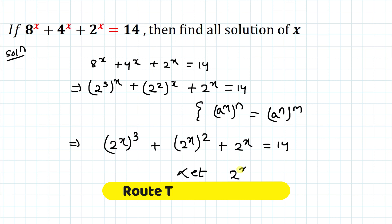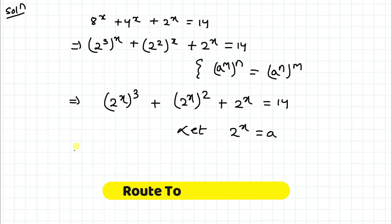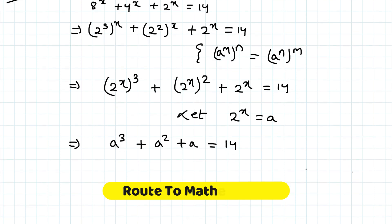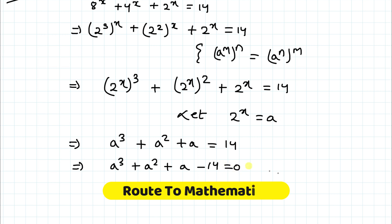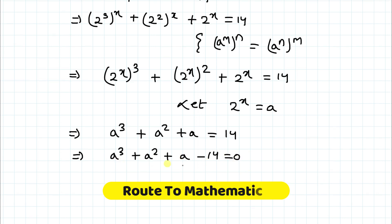Now let's take a substitution: let a = 2^x. Substituting, we have a³ + a² + a = 14, which implies a³ + a² + a - 14 = 0.